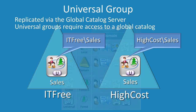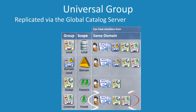You should also consider that since group membership is held on the global catalog server, changes to the group will be replicated with global catalog server replication. If your universal group membership changes a lot, this means more replication between global catalog servers in the forest. Additionally, if a user is a member of a universal group, they will require a global catalog server to log in — if one is not available, they will not be able to log in. If you do decide to use universal groups, they can contain users, computers, global groups, and other universal groups.